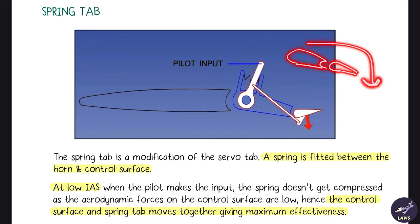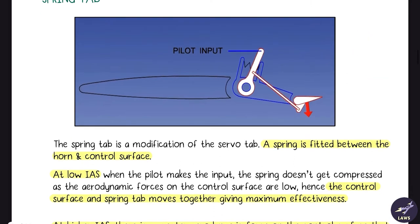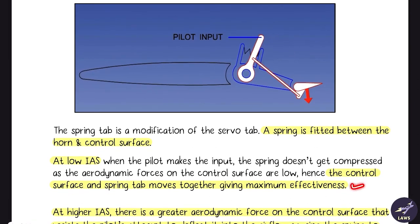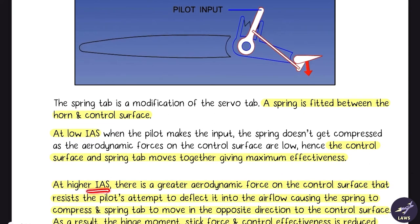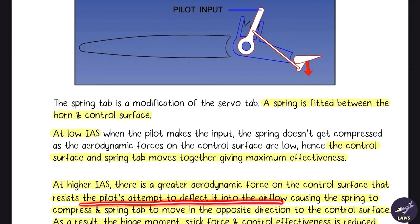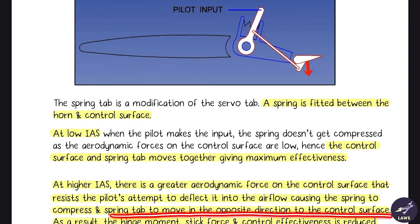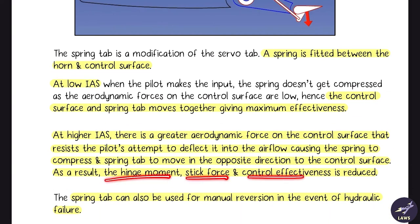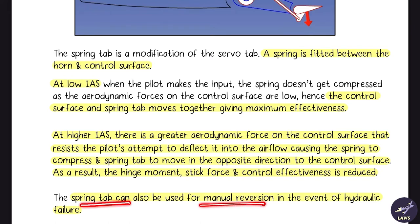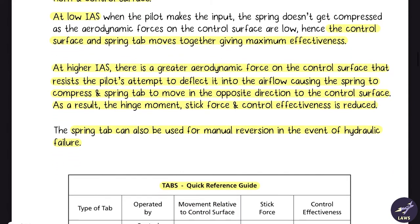This maximum deflection and stick force feel was the problem with the servo tab, now solved by the spring tab. At higher IAS, there is greater aerodynamic force on the control surface that resists the pilot's attempt to deflect it, causing the spring to compress. The surface and the spring tab move in opposite directions, reducing hinge moment, stick force, and control effectiveness. The spring tab can also be used for manual reversion in the event of a hydraulic failure.